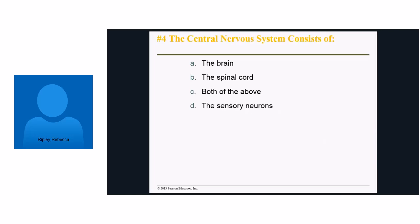We talked about the nervous system being divided into the central nervous system and the peripheral nervous system. The central nervous system consists of: A) the brain; B) the spinal cord; C) both of the above; or D) the sensory neurons. The answer is both — the central nervous system is made up of the brain and the spinal cord.